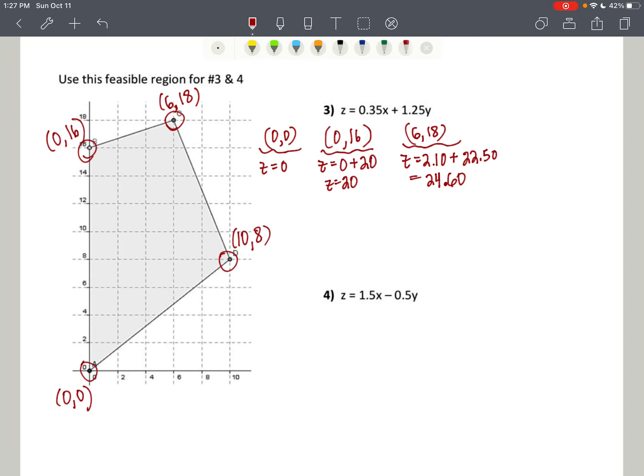And I'm thinking of it in terms of money, so that's why I put 60 at the end. And then our last ordered pair, 10, 8. That's going to be 3.5. And then 8 times 1.25 is 10. So that's going to be 13.5. So our smallest, 0, 0, minimized. And our largest right here. So the max is 24.60. And that's 6, 18 maximized the objective function.